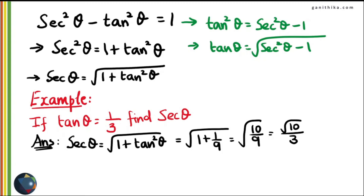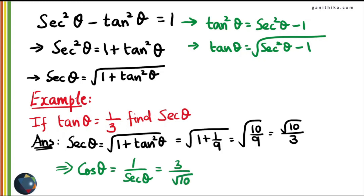So sec θ = √10 / 3. If the question asks for cos theta instead, you simply take the reciprocal of secant theta, since cos theta is the reciprocal of secant theta. So if tan θ = 1/3 and you need cos θ, first find sec θ and then reciprocate the answer.